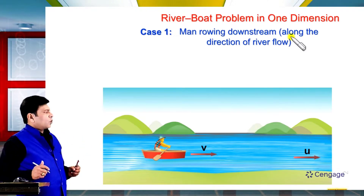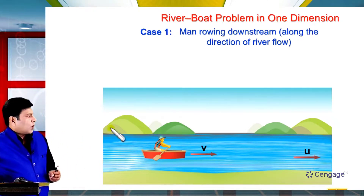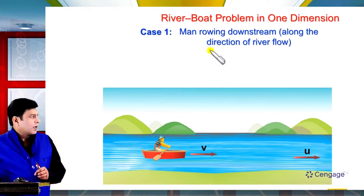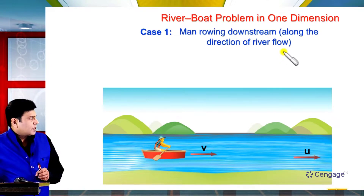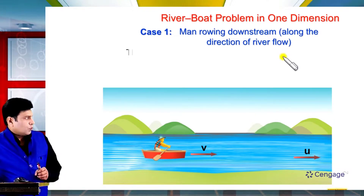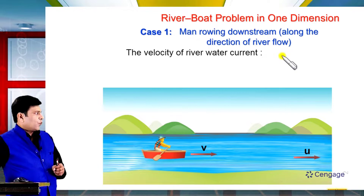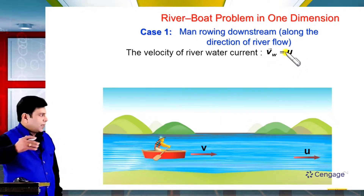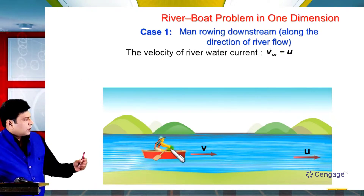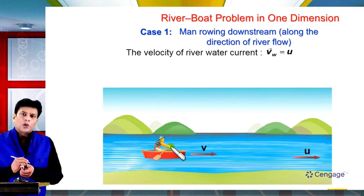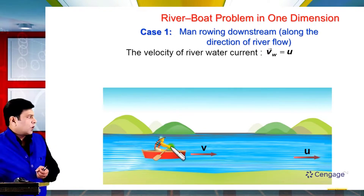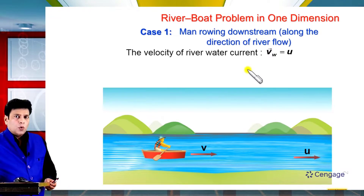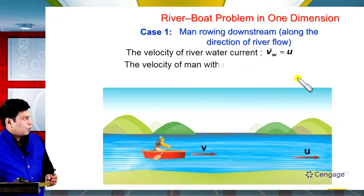If we are taking the rightward direction as positive, let us write the velocity of the river water current with the suffix VW equal to U — with a positive sign, because rightward direction is positive. Now we can write the velocity of the man with respect to water, or velocity of the boat with respect to water, as equal to V. It is also positive.